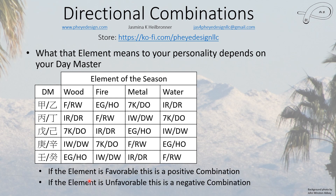Here's the kicker: it depends on whether your day master is strong or weak as to whether one of these is favorable or unfavorable to you. If it's favorable it's a positive combination; if it's unfavorable it's a negative combination. This is why we say a combination is not necessarily a positive thing — it can be quite negative.